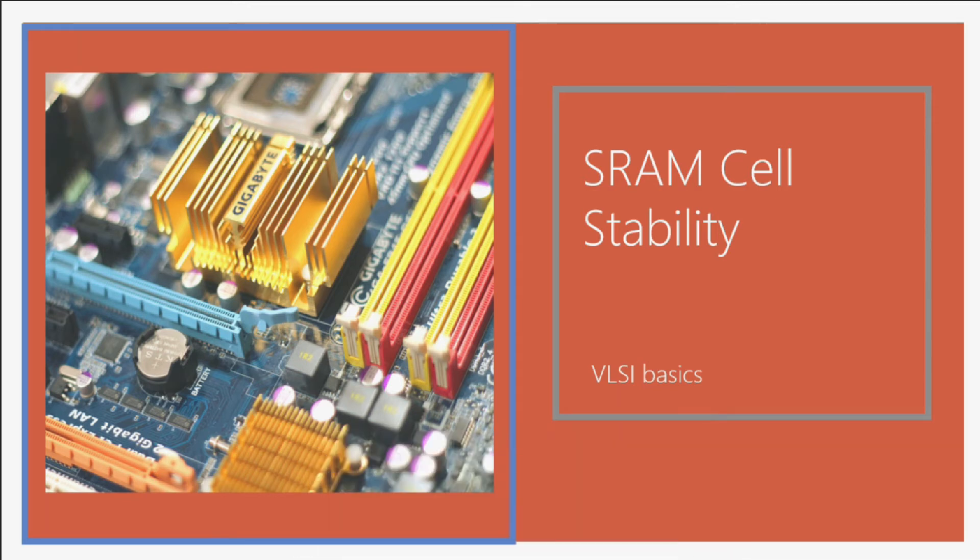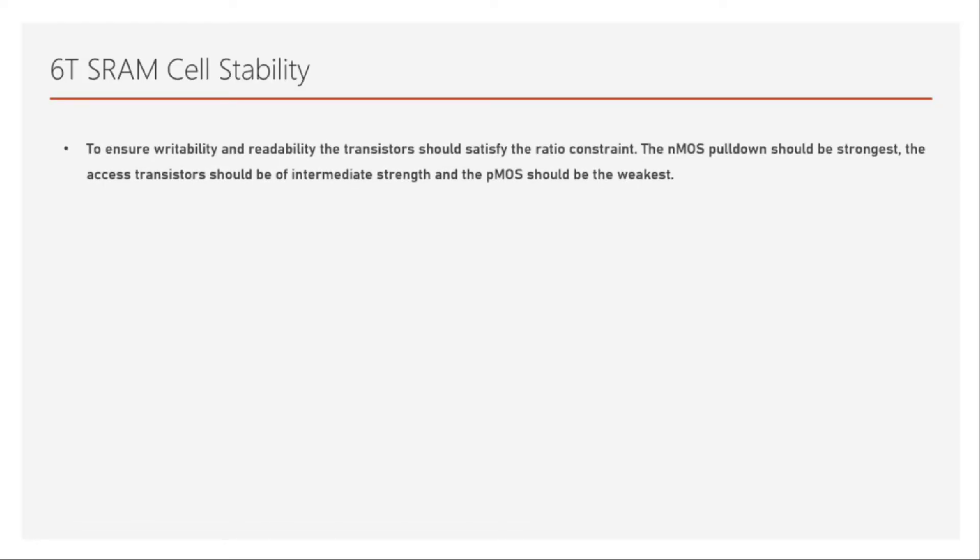To ensure writeability and readability, the transistors should satisfy the ratio constraint. The driver transistor of NMOS in the cross-coupled inverter has to be strong enough compared to the access transistor, to ensure that it can pull it down and will not glitch the voltage. The NMOS pull-down should be strongest, the access transistor should be of intermediate strength, and the PMOS should be the weakest.